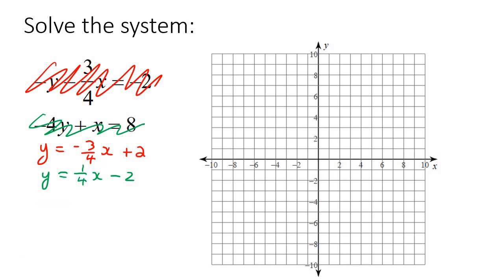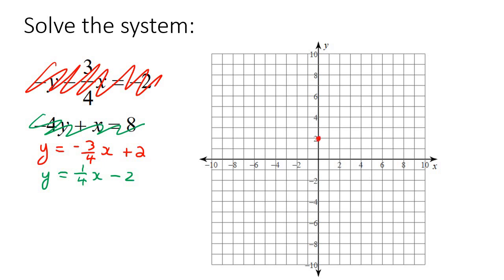Starting with the first line: the y-intercept is at positive 2, and the slope is negative 3 over 4, which is rise over run. So we go 3 down and then 4 to the right, put a little dot over there, and connect them. So there we have our first line.